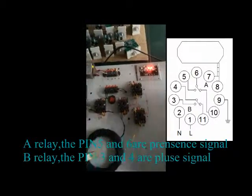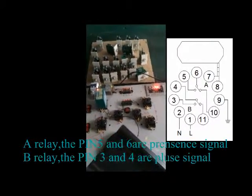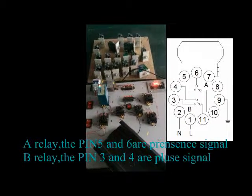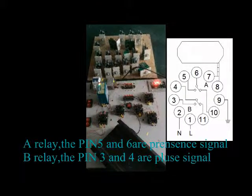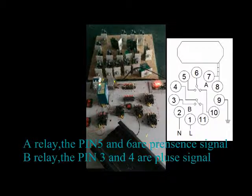So if the car is on the loop, you can see they have the presence signal and the pulse signal.